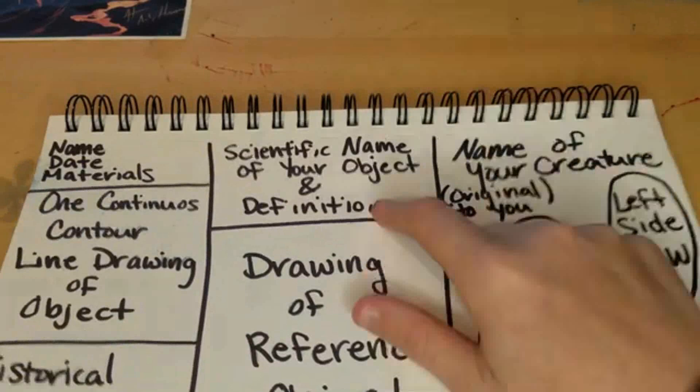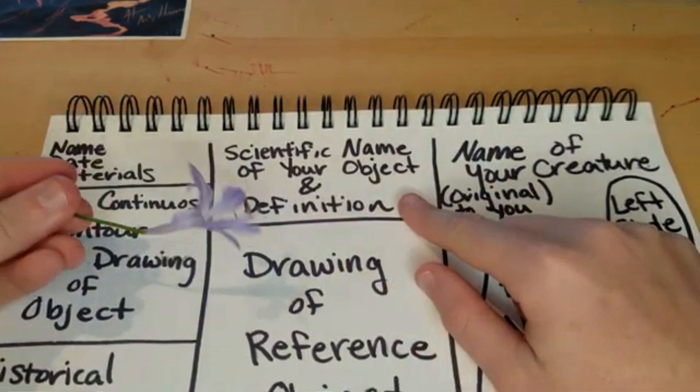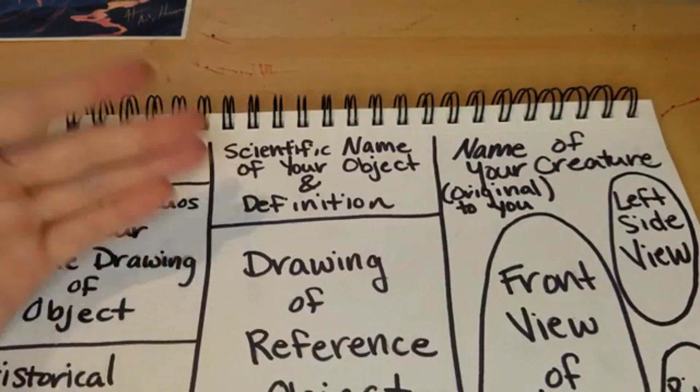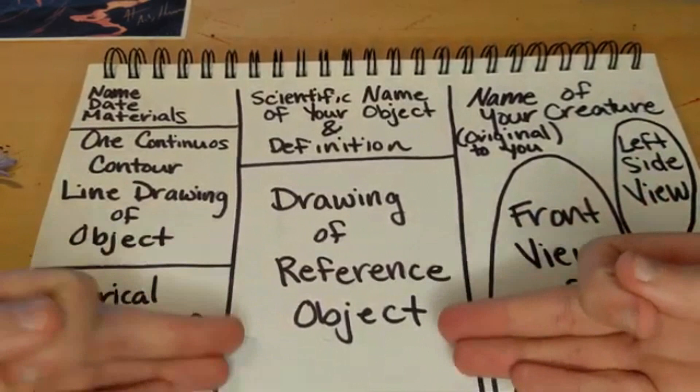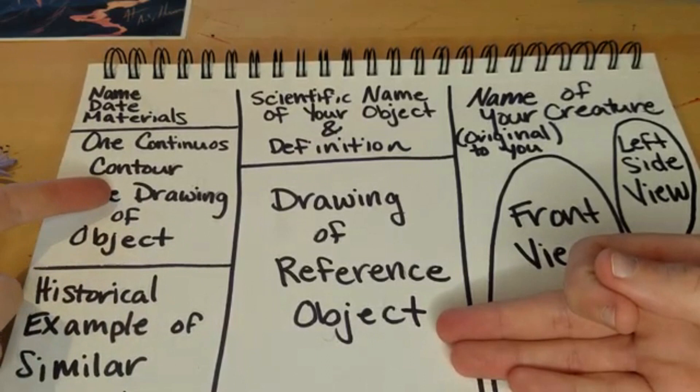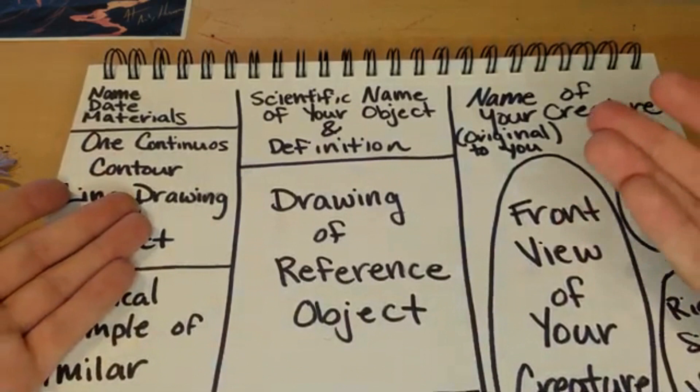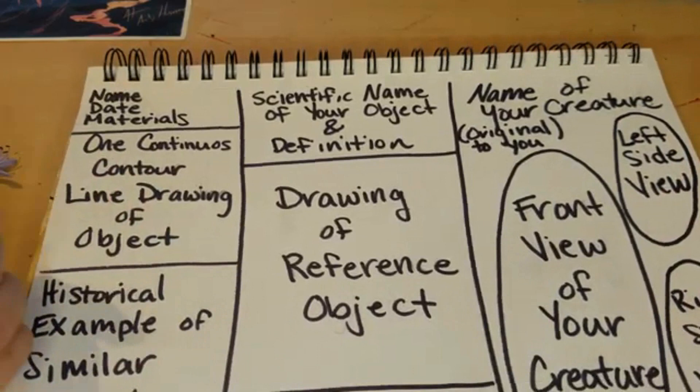Up here we have the scientific name of your object and the definition. Mine is the African lily — I also have the Latin terminology written down on my finished work and the definition. Mine was a plant that can live up to 70 years, plus some more basic information about the object. Next, we have the drawing of our reference object, which is different from our one continuous line drawing because contour lines cover the outside and inside of the object. I treated this more like a mark-making study — I experimented with pointillism, hatching, and cross-hatching in my drawing of my reference object.